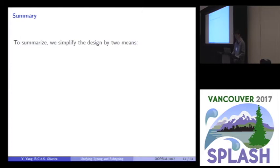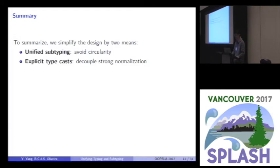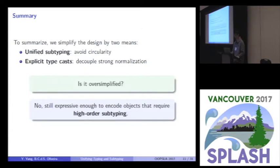Okay, small summary here, we simplify the design of our calculus by two means. First, we use this new idea, unified subtyping, to avoid circularity between typing and subtyping. And second, we use explicit type casts to decouple strong normalization from the proofs. So, the question here is, is this design oversimplified? We consider no, because it is still expressive enough to encode objects, which requires some advanced features like high-order subtyping. So, we think our calculus is still appropriate to serve as the theoretical foundation for object-oriented programming.